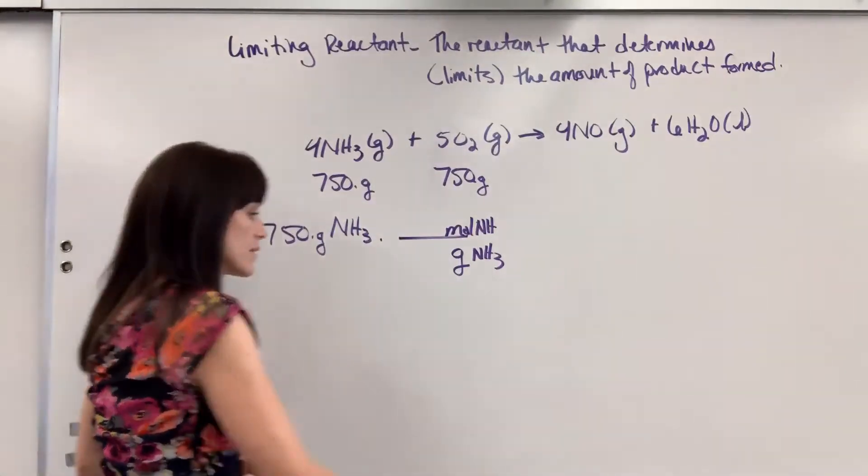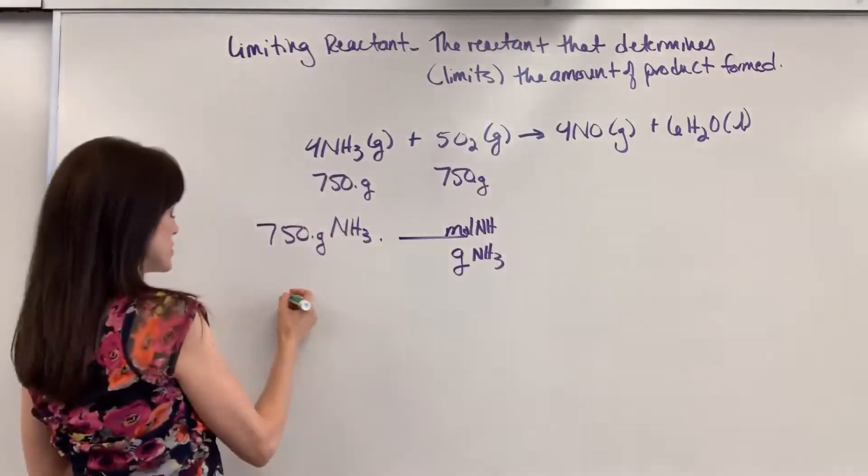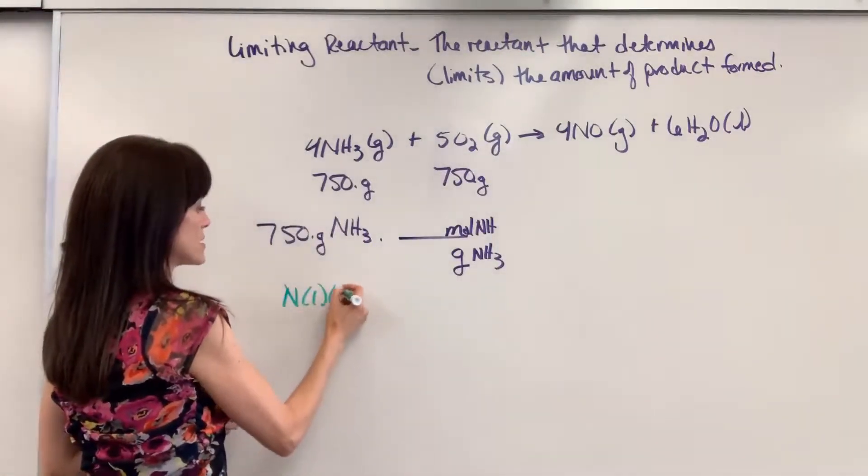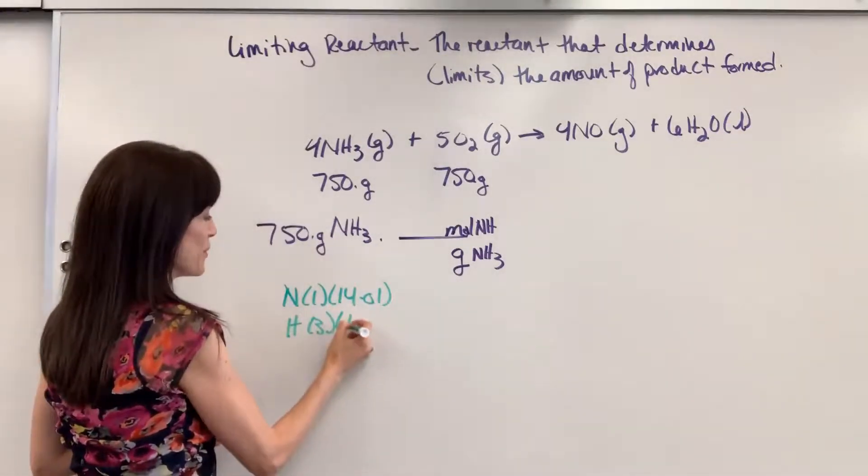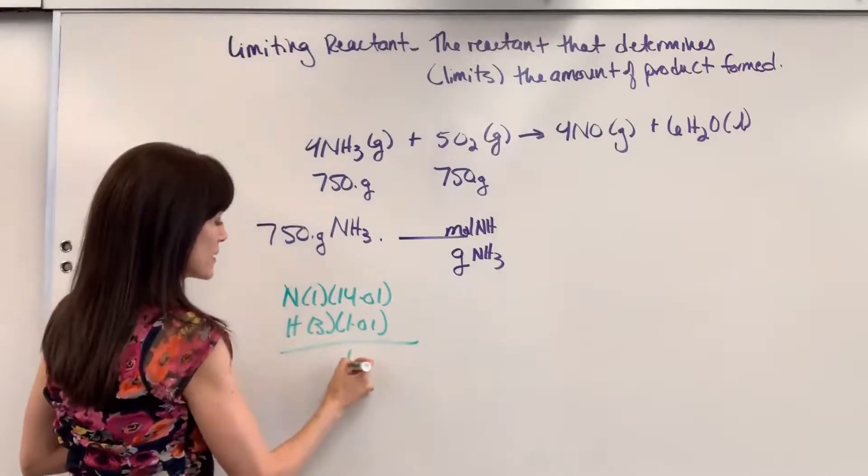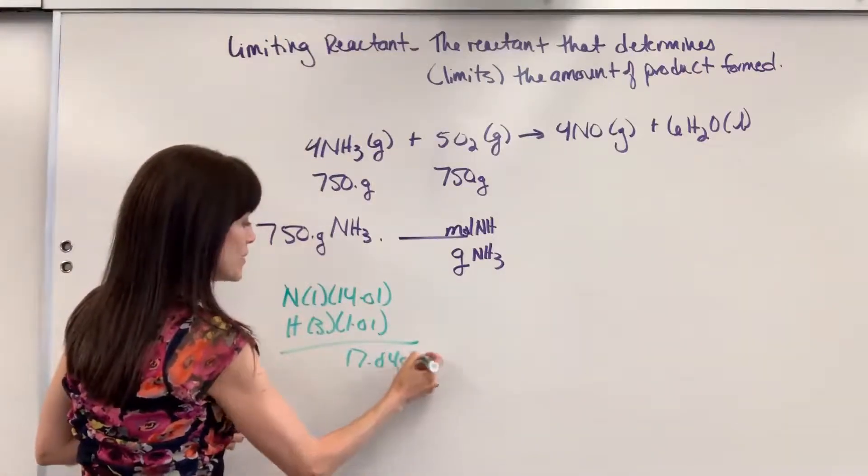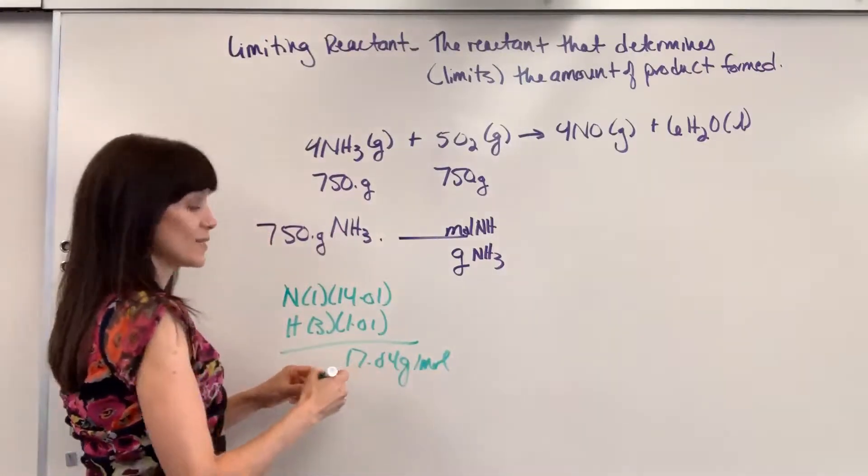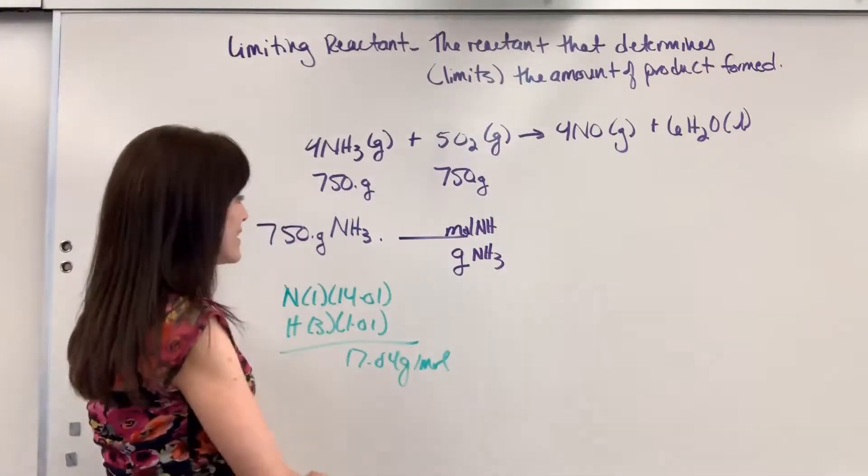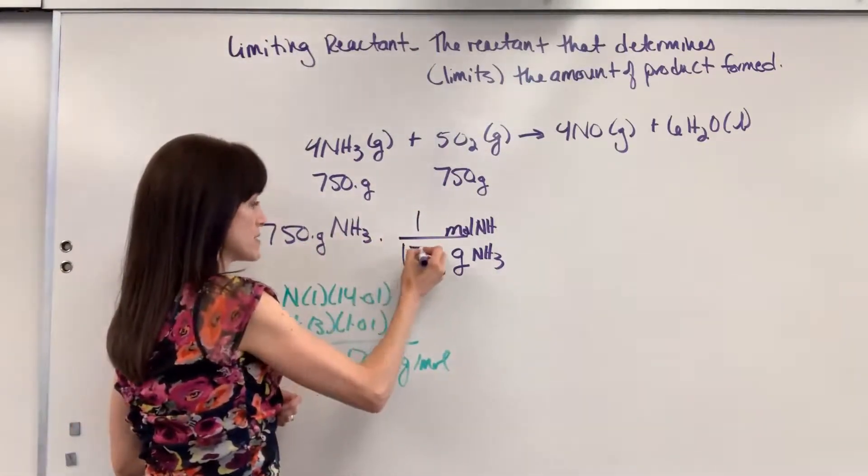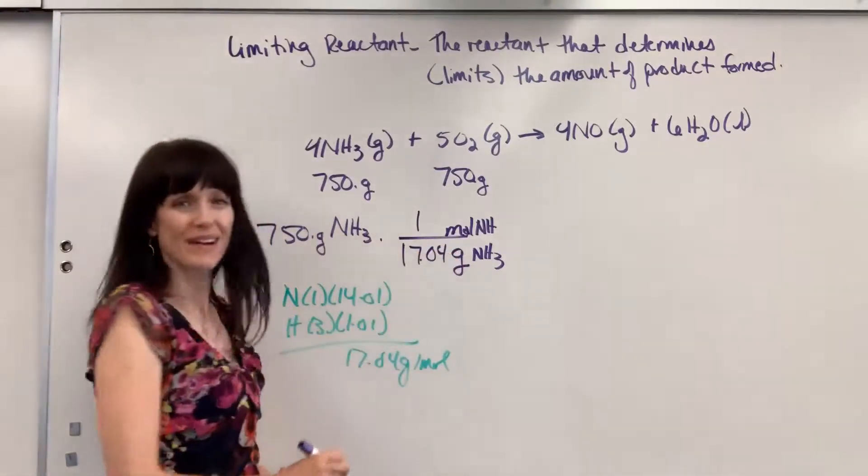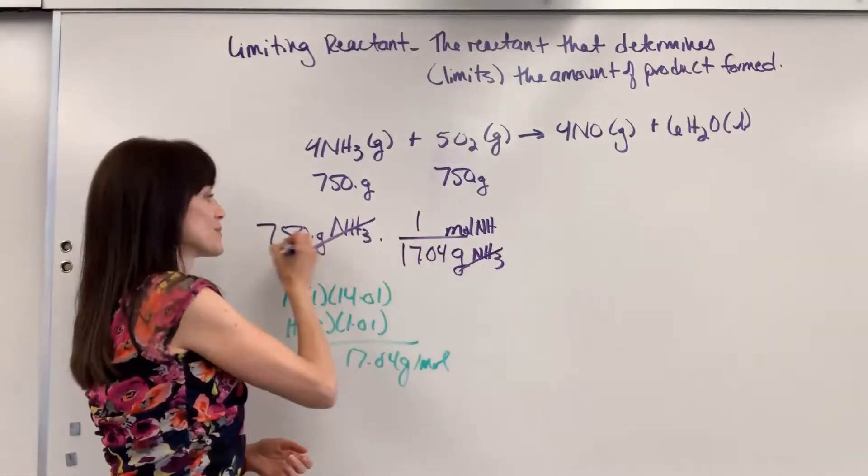I'll do that in a different color. We have one nitrogen and that is 14.01. And then we've got three hydrogens, 1.01. Add that up, we get 17.04 grams per mole. So there's the molar mass. I'm going to put one mole of ammonia weighs 17.04 grams. Okay, we cancel the grams of ammonia.